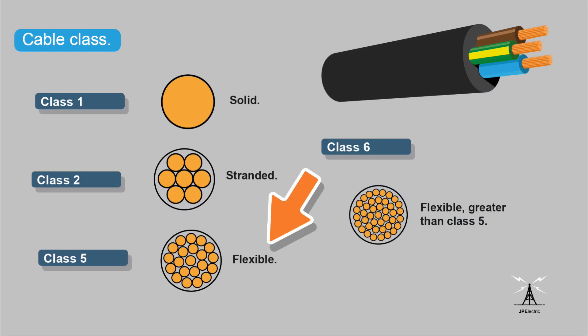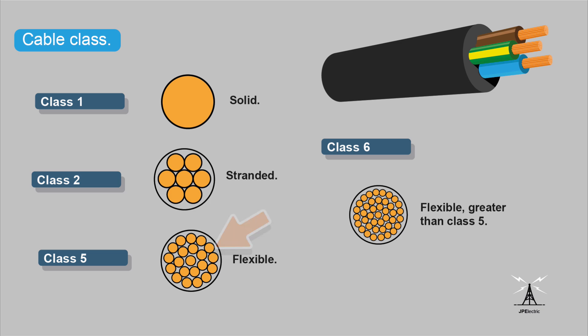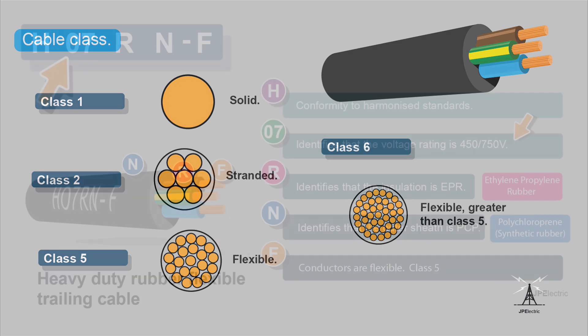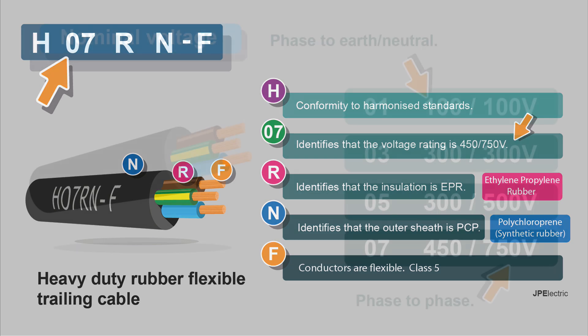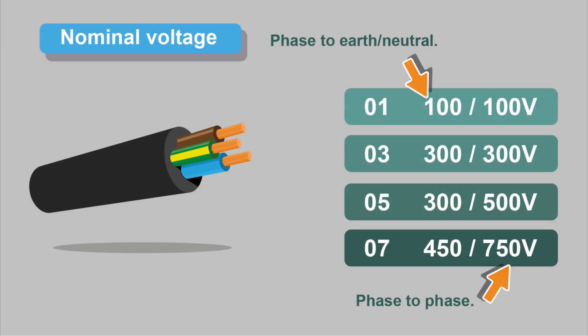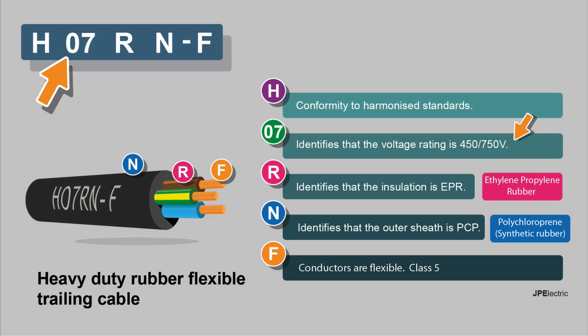Conductors come in various classes; flexible conductors are class 5. The F in the cable stands for flexible, where you've got lots of little strands of copper, hence making the cable flexible. The 07 identifies the voltage rating — in this case 450–750 volts. The first voltage rating is phase to earth or phase to neutral, and the second is phase to phase. The rated voltage of a cable shall be at least equal to the nominal voltage of the system for which it's intended.